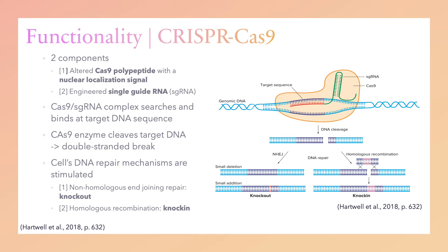The genetically engineered CRISPR-Cas9 system has two components. The first component is a Cas9 polypeptide, an endonuclease that can make double-stranded breaks in the DNA. It is altered so that it includes a short stretch of amino acids that constitute a nuclear localization signal, allowing the protein to be imported into the nucleus, where it can act on DNA. The second is an investigator-designed single-stranded RNA called single-guide RNA. At the 5' end of the single-guide RNA is a 20-base pair sequence that is complementary in sequence to a target site of interest in the genome to be altered. The 3' end of the single-guide RNA binds specifically to the Cas9 protein. The single-guide RNA sequence is designed to bring the Cas9 endonuclease to a specific target in the genome. In the nucleus, Cas9 single-guide RNA complexes seek out and bind to their designated genomic DNA target, making a double-stranded break.